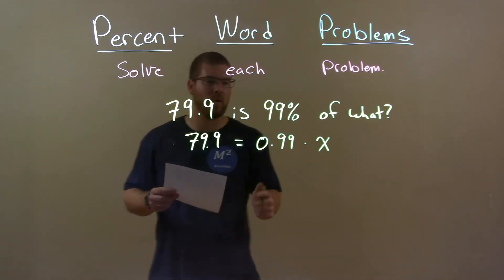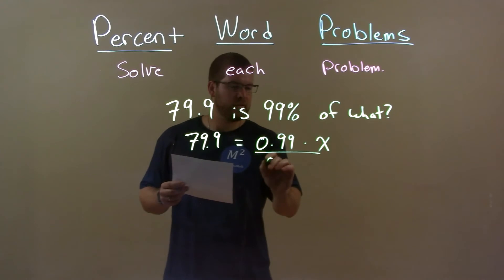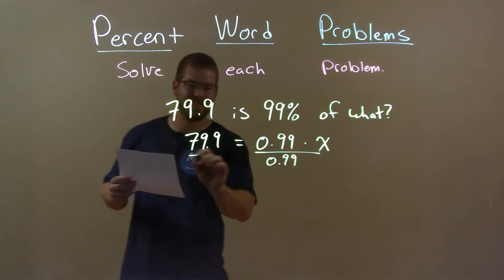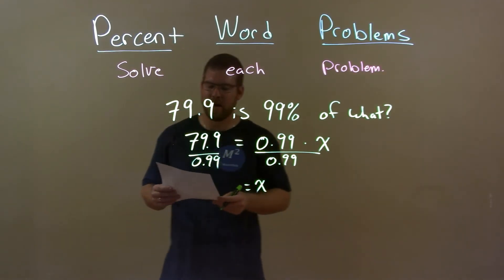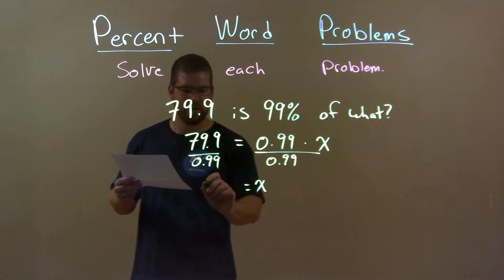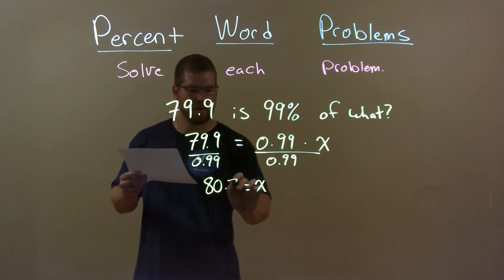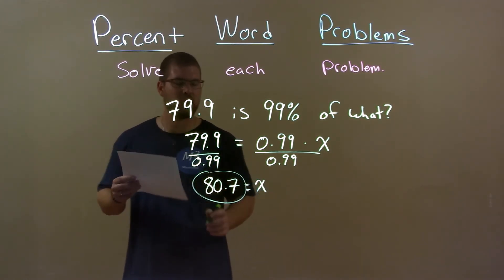Now, let's solve for x. We divide 0.99 to both sides because that's the opposite of multiplication. This leaves me x by itself. 79.9 divided by 0.99 comes out to be 80.7. So there is our final answer.